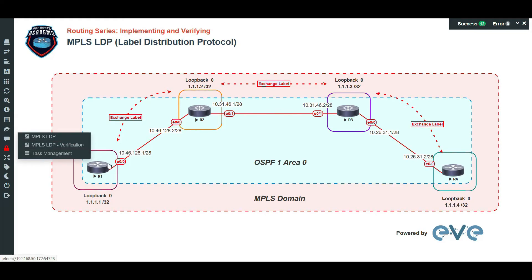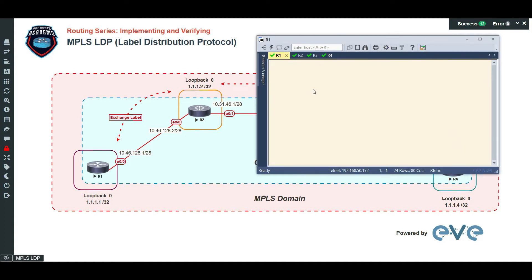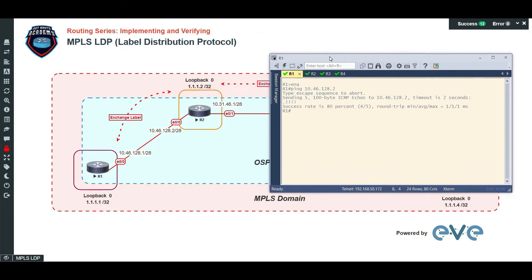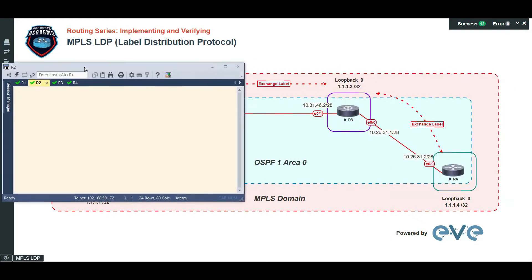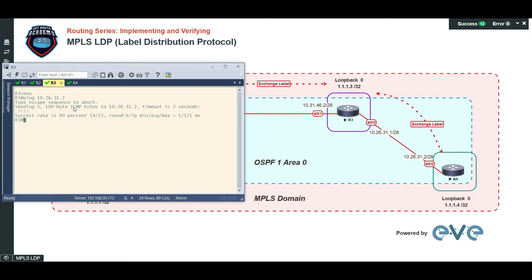I have already loaded up the routers here. Let's start to do basic testing. R1 to R2 works fine. Now let's see R2 facing R3. Next would be R3. That confirms everything is loaded up accordingly. I made sure that the basic configuration is working here so you can proceed with the activity once everything is loaded up.